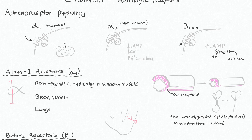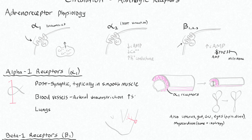These alpha-1 vasoconstricting receptors are usually postsynaptic and typically in smooth muscles, so they'll be located on these muscle fibers. When you have binding of an alpha-1 agonist to this receptor, you'll cause vasoconstriction or contraction of these smooth muscles, narrowing the diameter of these blood vessels. This causes arterial vasoconstriction, which increases your systemic vascular resistance, your SVR, and it also causes venous vasoconstriction.